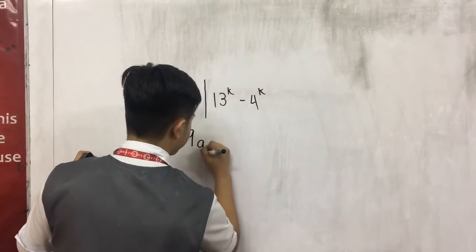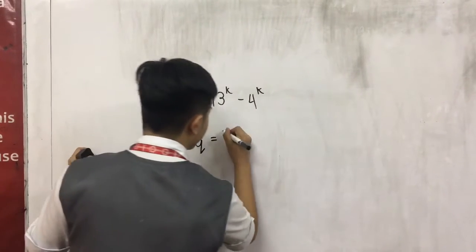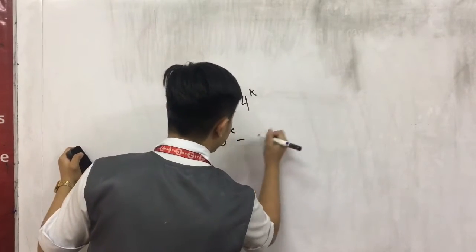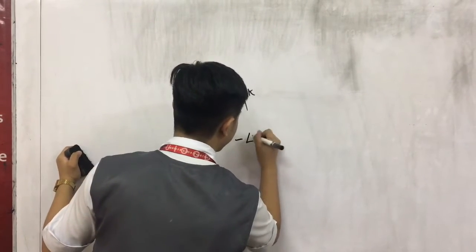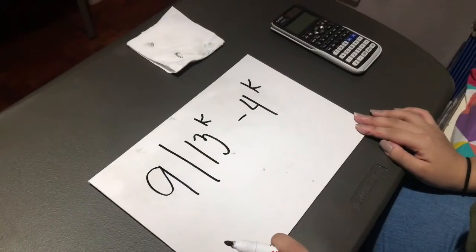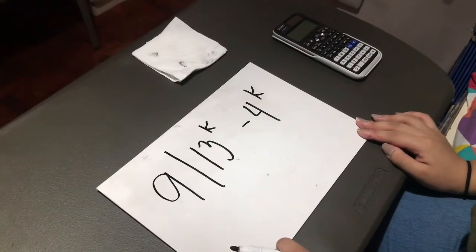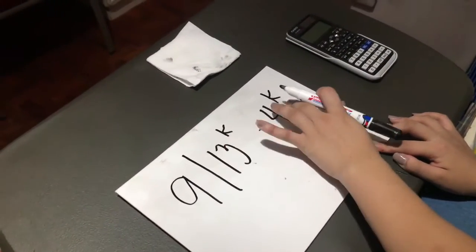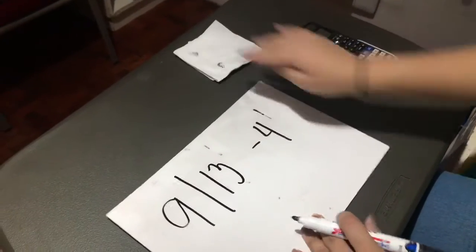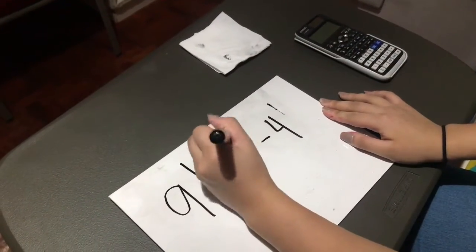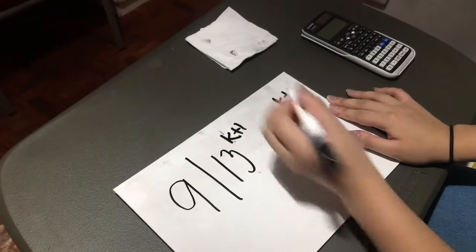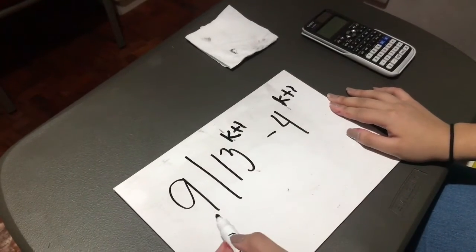9q is equal to 13 raised to k minus 4 raised to k. To start with the proof of induction, we will change all k with k plus 1, so it will be: 13 raised to k plus 1, minus 4 raised to k plus 1, is divisible by 9.